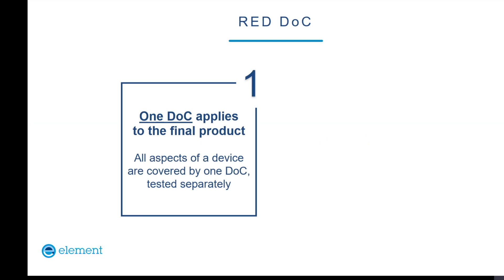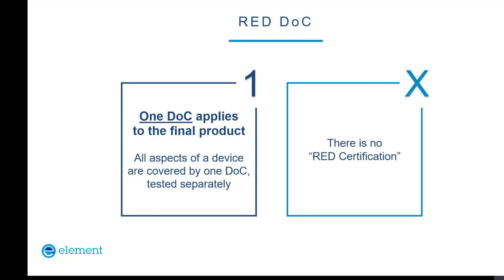One declaration of conformity document applies to the final product and covers all aspects of the device. In many cases, only one directive may seem to apply, but in reality it might be more than one. For radio equipment, the RoHS directive — restriction of hazardous substances — would often also apply, and if it's also a machine, medical device, or toy, additional directives may apply. All applicable directives must be listed on the one declaration of conformity with one signature. As a reminder, there is no RED certification — there are other directives where type approval is required, but the RED is not one of them.